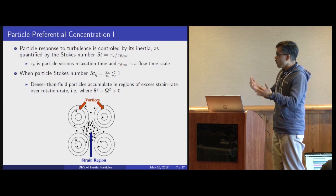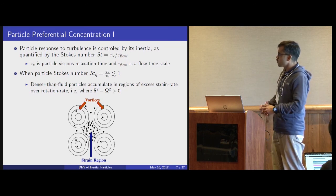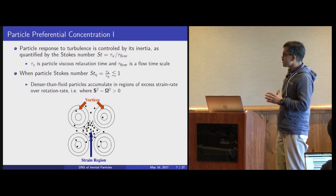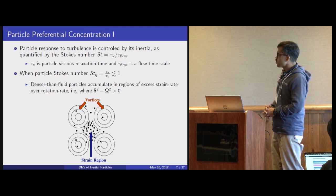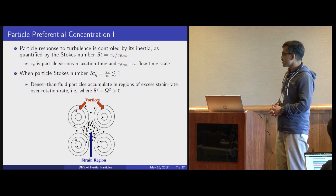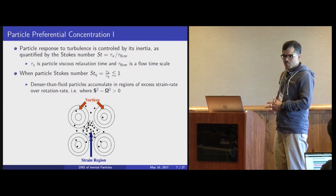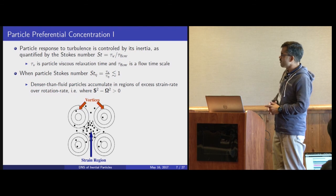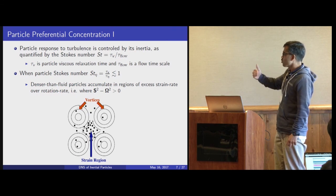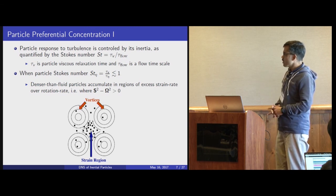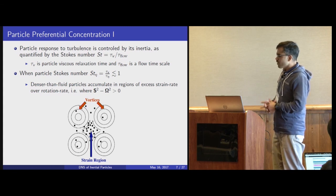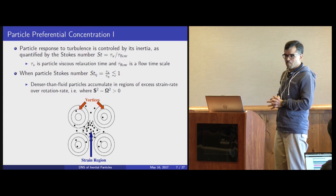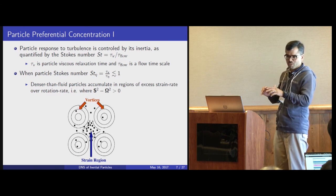The inertia of particles is quantified by a dimensionless parameter known as the Stokes number, which is a ratio of particle viscous relaxation time to a flow time scale. In turbulence you have a spectrum of turbulent scales, and typically we select the Kolmogorov time scale tau_eta. Therefore the Stokes number is defined as the ratio of the viscous relaxation time to the Kolmogorov time scale. When this Stokes number is less than or of order one, there is a well-known mechanism known as preferential concentration, by which particles are spun out of high vorticity regions and cluster in regions of high strain rate.